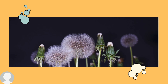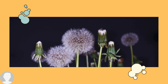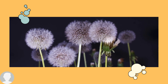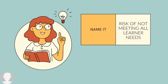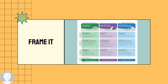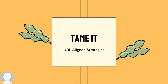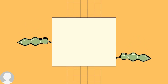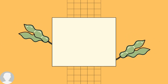When we don't proactively design so that all learners' needs are met, we risk not seeing all kids bloom and invite frustration in our learners. Let's name this barrier: risk of not meeting all learner needs. Let's frame this barrier with the UDL guidelines. Let's tame this barrier with UDL-aligned strategies that we can lean into by exploring the UDL guidelines in a proactive effort to create accessibility for all.